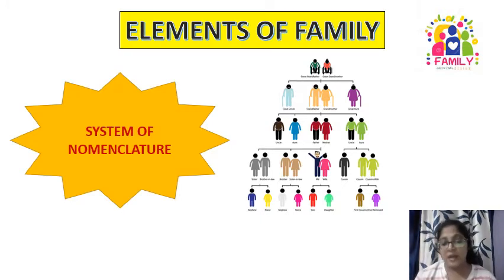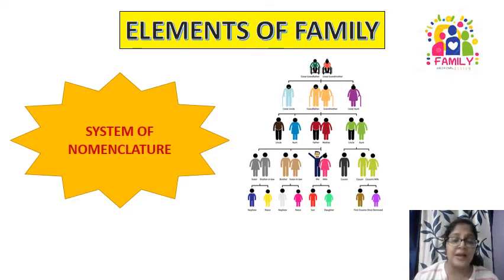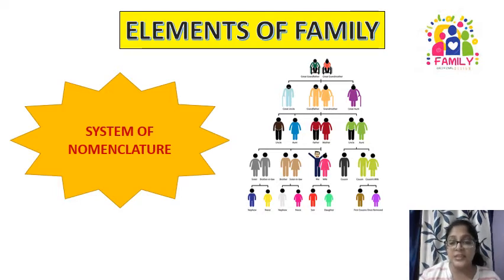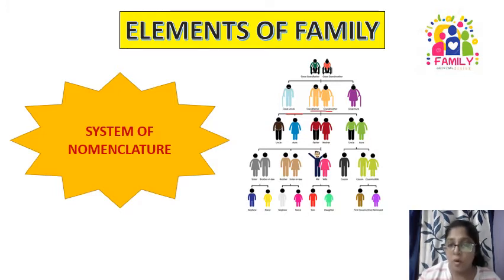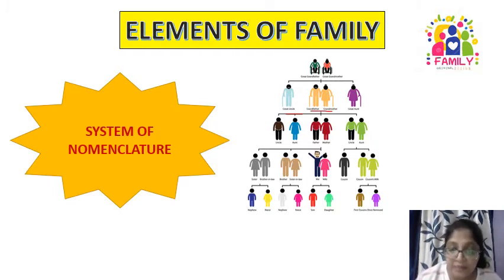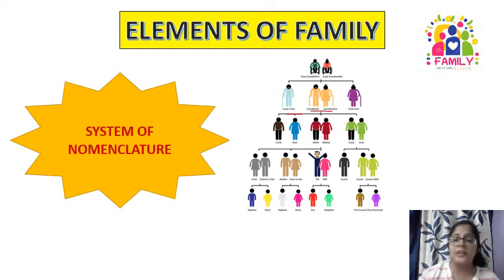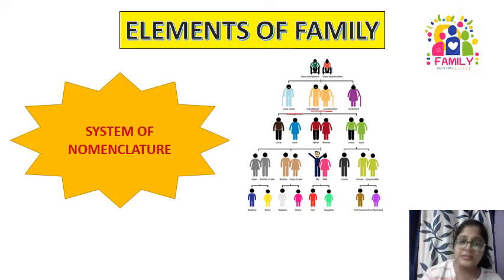The next element is a system of nomenclature. As we saw in the definition, we call different people father, mother, son, daughter — we give them names. As you can see the family tree shown here: great-grandfather and great-grandmother started their life through marriage, and the family extended — ultimately giving us nephew, niece, son, daughter, wife, cousin. Each part of the tree has a different name for each relationship, and that is what we call family.